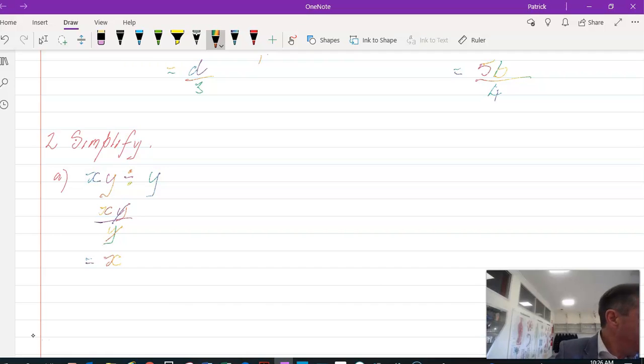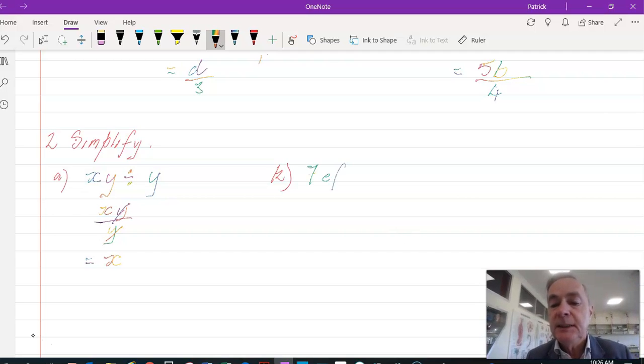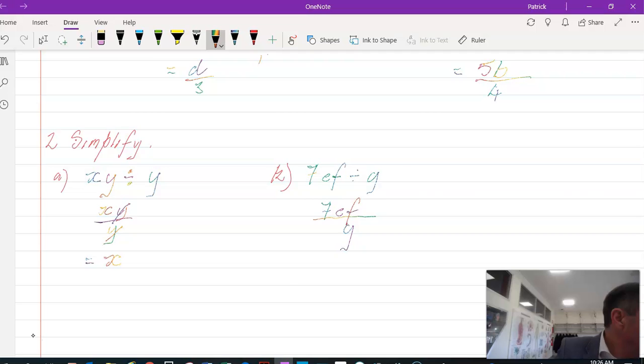Looking at another one, part k says 7bf divided by g. Step one, I'm going to write it in the right format: 7bf over g. There are no factors that will go into it. There are no common factors, so that is already in its simplest form. That's question two.